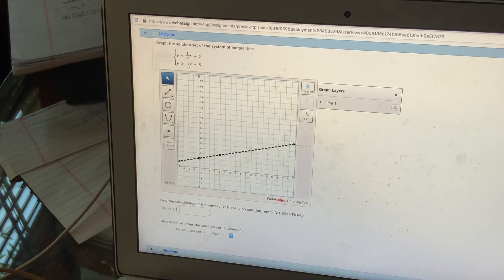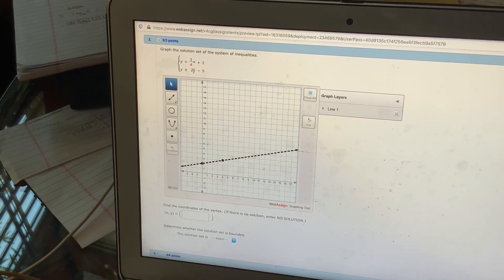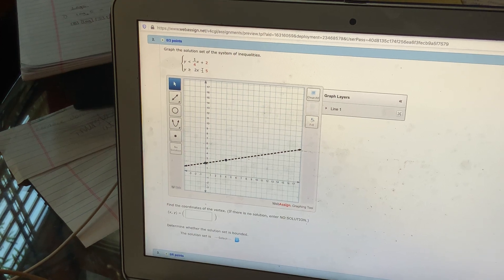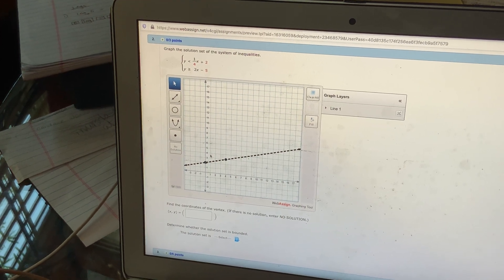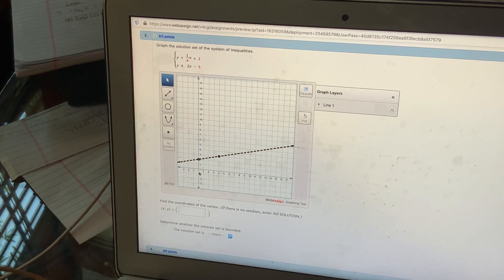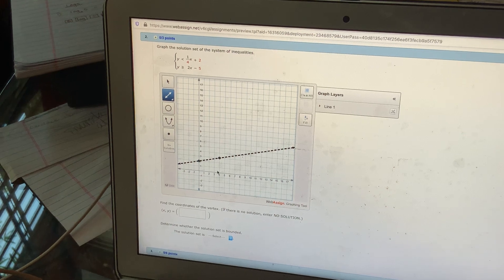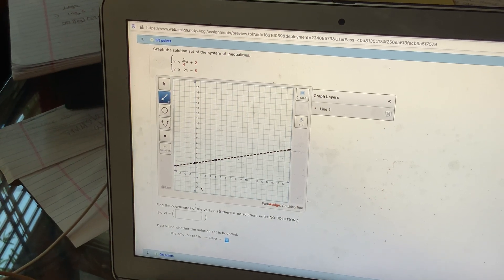So if I were looking at this, I would probably plug in 1 for x. So I would get 1 times 2 minus 5, which is negative 3. So I know that (1, -3) is a point. I almost didn't click my line. Make sure your line's clicked. So I've got (1, -3) is a point.